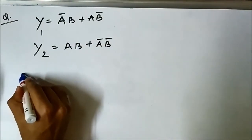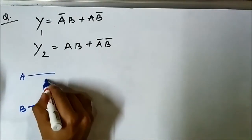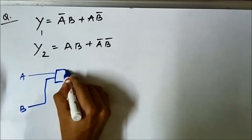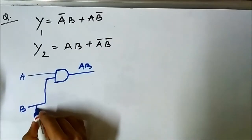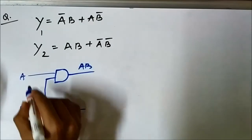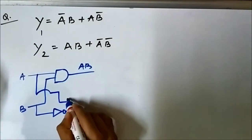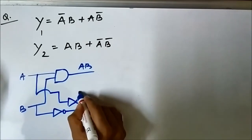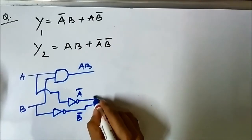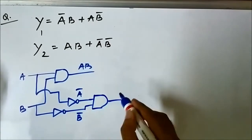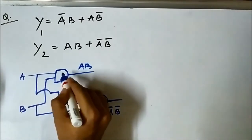For y2, we first get the individual terms. We take a and b directly through an AND gate to get a·b. Then we pass a and b through inverters or NOT gates to get ā and b̄ respectively.